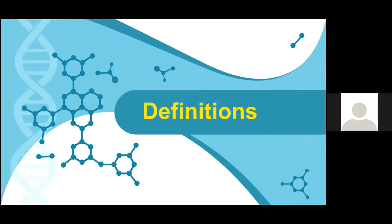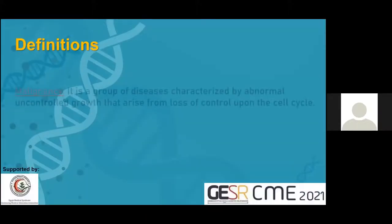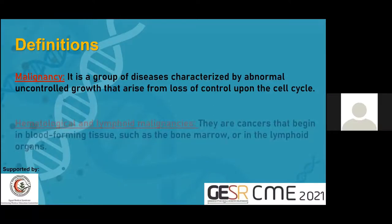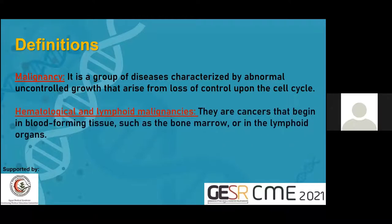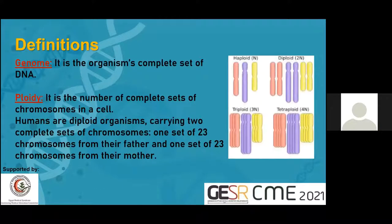Let's start with some important definitions. What is malignancy? It is a disease characterized by abnormal uncontrolled growth that arises from loss of control upon the cell cycle. The hematological and lymphoid malignancies are cancers that begin in blood-forming tissues such as the bone marrow or in the lymphoid organs. The genome is the organism's complete set of DNA, and diploidy is the number of complete sets of chromosomes in a cell.